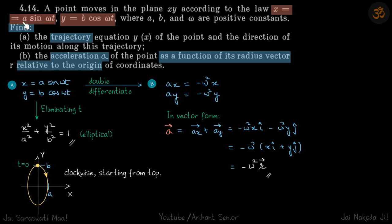A point moves in the x-y plane with x = a sin ωt and y = b cos ωt. We need to find the trajectory of the path and acceleration of the point as a function of its radius vector relative to the origin of coordinates.